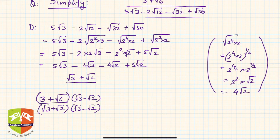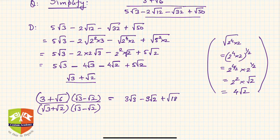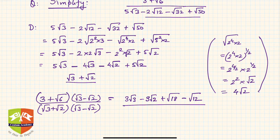Since we divided by (√3 - √2), we multiply both numerator and denominator by (√3 - √2). Opening the brackets: 3 × √3 gives 3√3, minus 3√2, then √6 × √3 gives √18, and minus √6 × √2 gives √12, all divided by (√3 + √2)(√3 - √2).